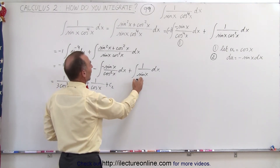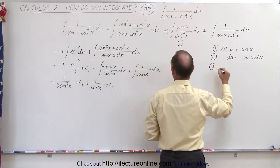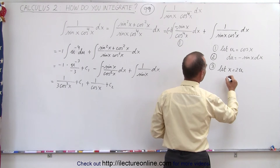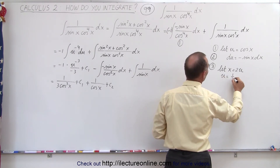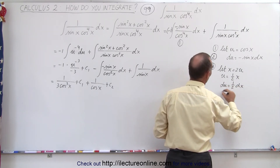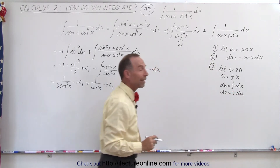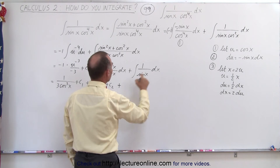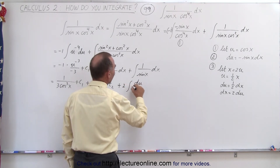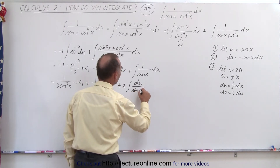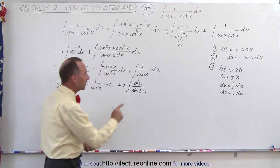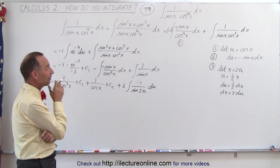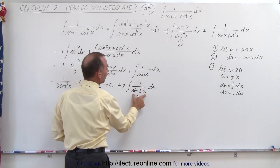We still need to take care of the integral of one over sine of x dx. For integral number three, we're going to let x equal 2u. Then u equals one-half x, and du equals one-half dx, or dx equals 2 du. Making that substitution, dx becomes 2 du, so we put the 2 out front times the integral, and the sine of x becomes the sine of 2u. We'll write it with 1 on top and du, and use the double-angle identity in the denominator.